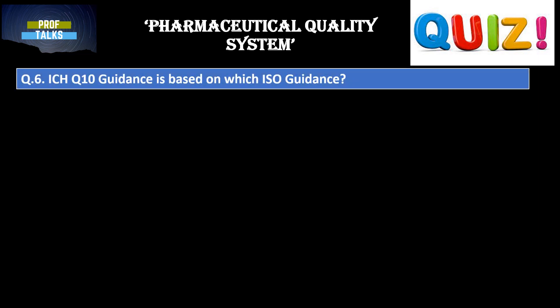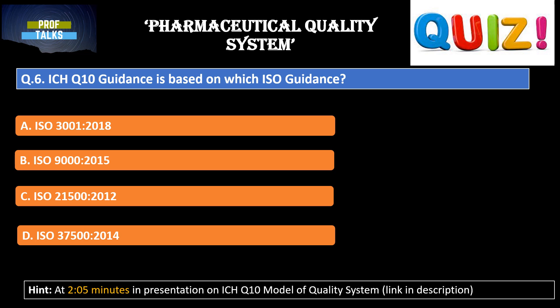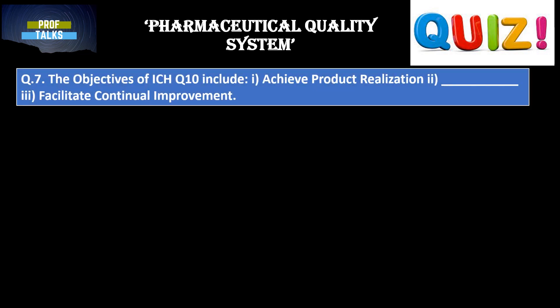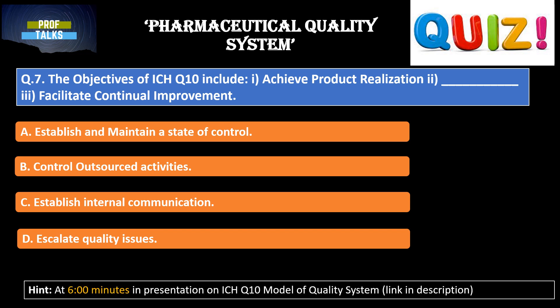Now we move to the questions on ICH Q10. The first ICH Q10 question is: ICH Q10 guidance is based on which ISO guidance? The three objectives of ICH Q10 guidance include: first is to achieve product realization; second is a fill-in-the-blank; and third is to facilitate continual improvement. Options for the second objective are: establishing and maintaining a state of control; control over outsourced activities; establishing internal communication; and escalation of quality issues. You can find the answer at around six minutes in the ICH Q10 presentation.